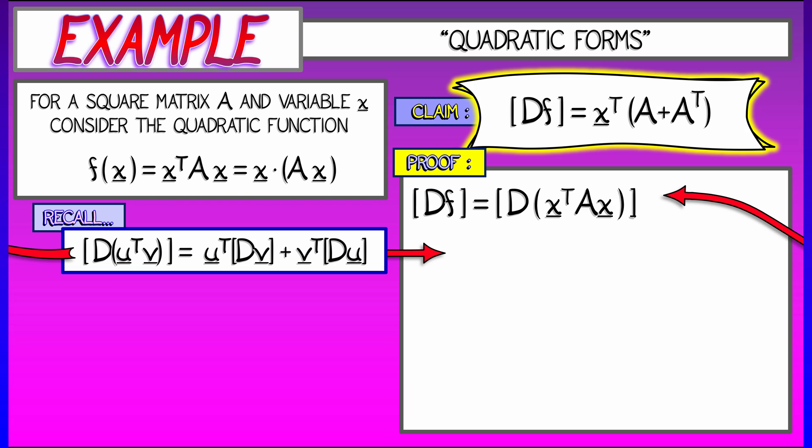We get the derivative of this quadratic form as x transpose times the derivative of A times x plus A x transpose times the derivative of x. Now, these derivatives are not going to be hard.